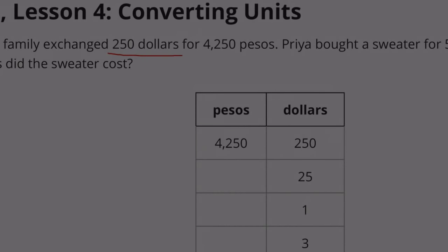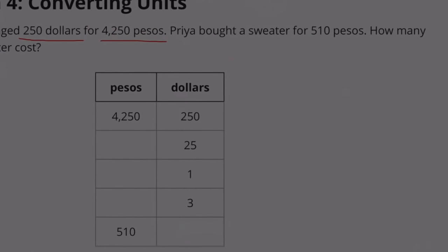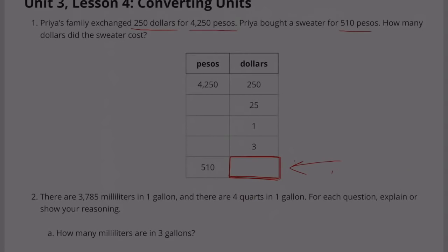$250 was exchanged for 4,250 pesos and she paid 510 pesos for the sweater. We need to figure out the amount that goes in this box right here. That will tell us how much the sweater cost in dollars. I'm going to divide this by 250. That equals 1.